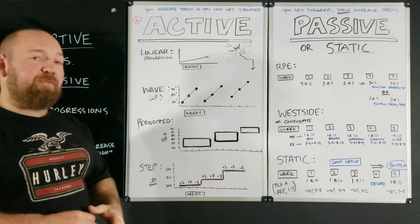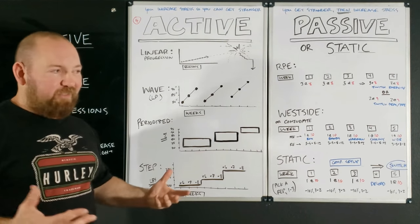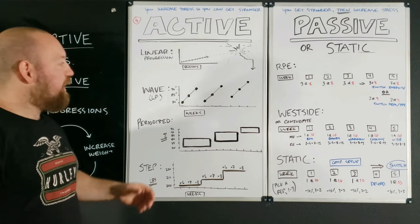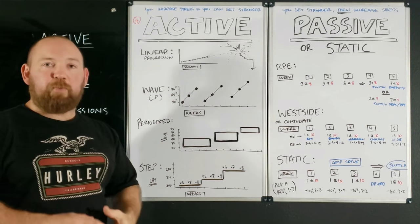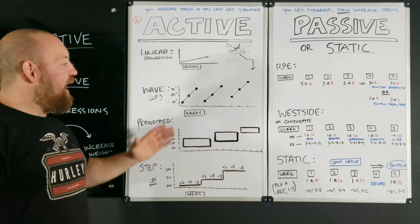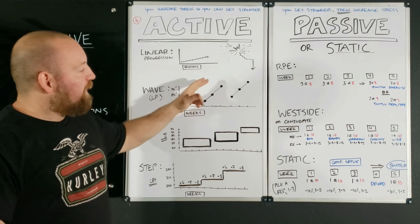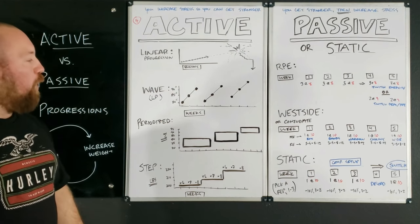Then you might go down into something like a wave progression, which is linear progression with extra steps. Something like 5-3-1, you wave over three weeks between different percentage ranges, and then you add your weight. So things tick up just bit by bit over time.